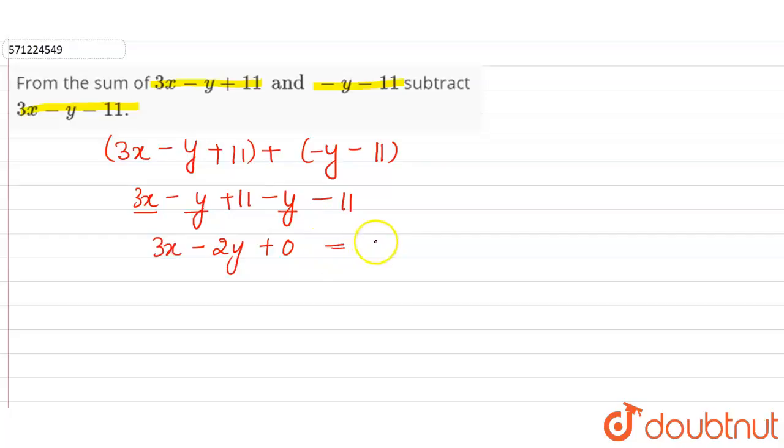So the algebraic expression that we have from the sum of these two algebraic expressions is 3x minus 2y.